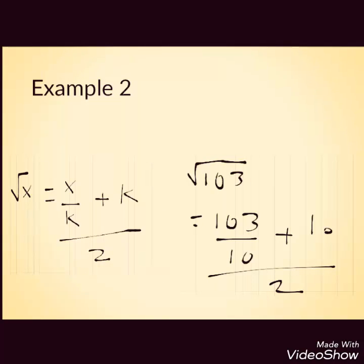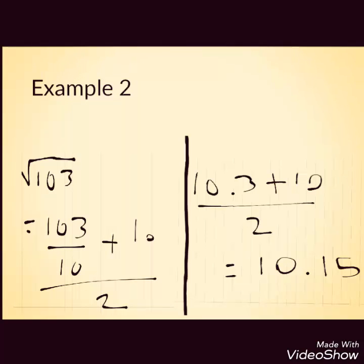Similarly, say I have to find square root of 103. The nearest perfect square to 103 is 100, square root of 100 is 10. Substituting it in the formula, x is 103, k is 10. So 103 by 10 plus 10 whole divided by 2, which is 10.3 plus 10 whole divided by 2, or 20.3 divided by 2, or 10.15.